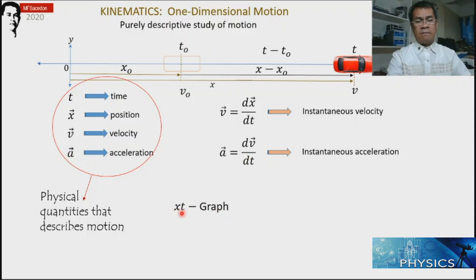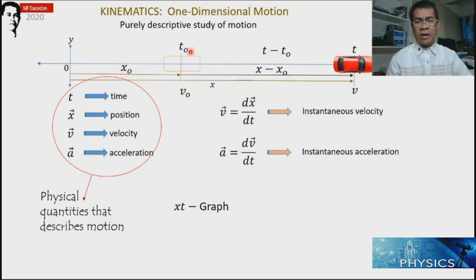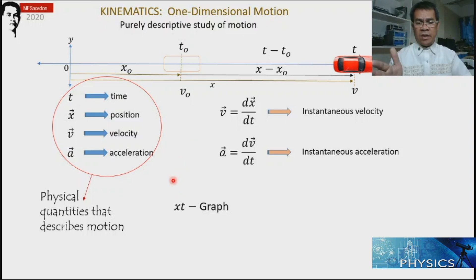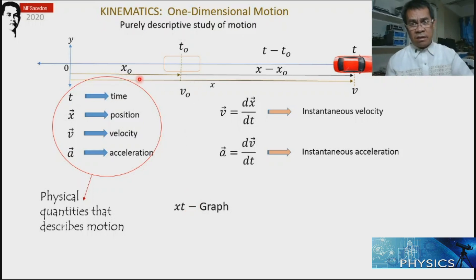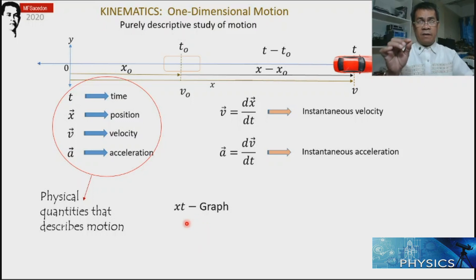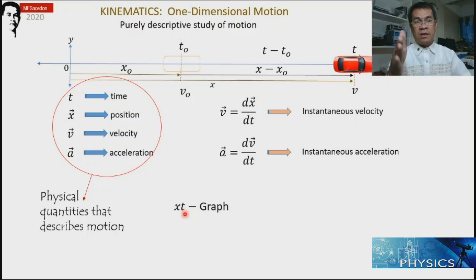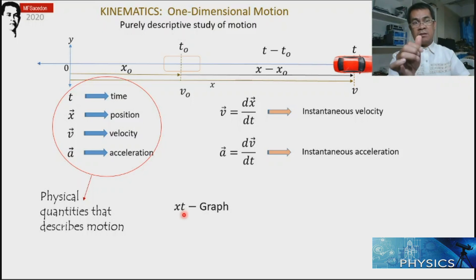What are the graphs? We have the x-t graph, which means it is the position for every time. Position is the dependent variable while t is the independent variable. The vertical axis is for x and the horizontal axis is for t, so for every value of t there is a corresponding value of position. If the graph is horizontal, we can describe the particle to be at rest — there is time but no change in position, so the particle does not move.